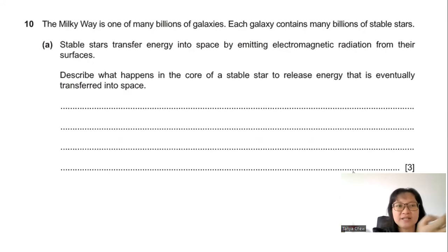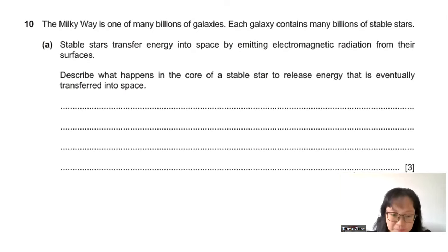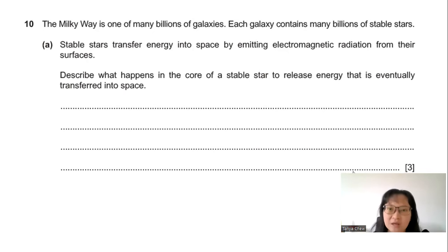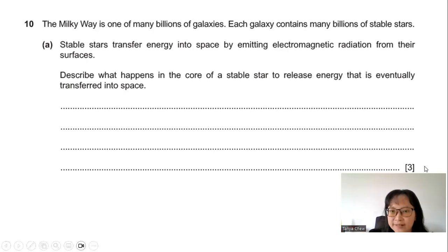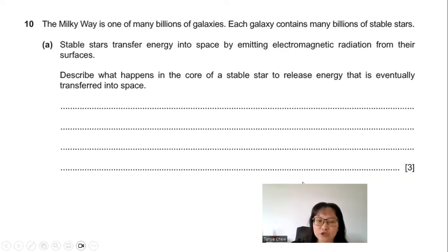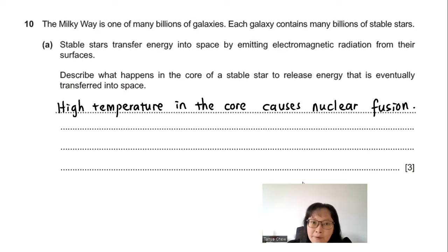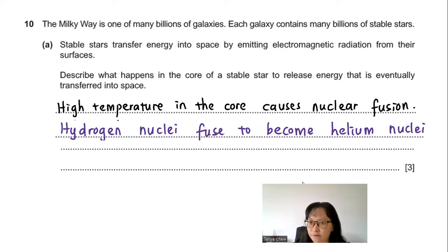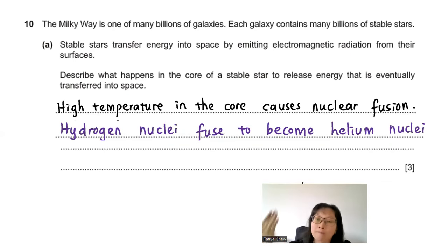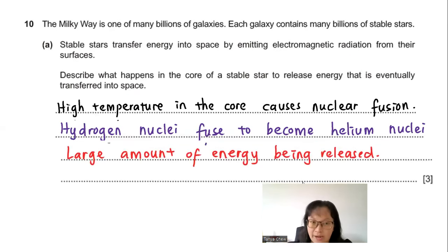Question 10: The Milky Way is one of many billions of galaxies. Part A: Describe what happens in the core of a stable star to release energy. High temperatures in the core cause nuclear fusion to occur. In this process, hydrogen nuclei fuse together to form helium nuclei, releasing a large amount of energy.